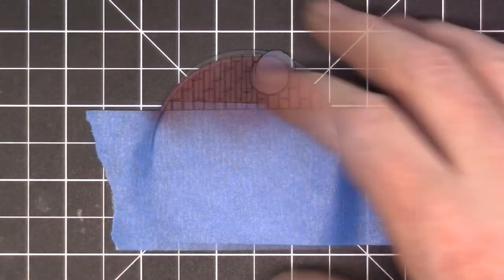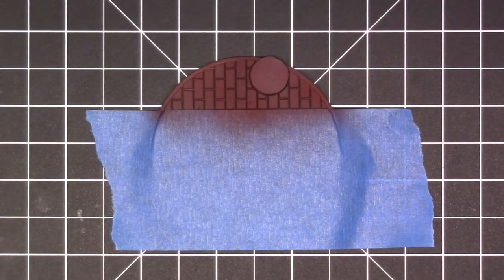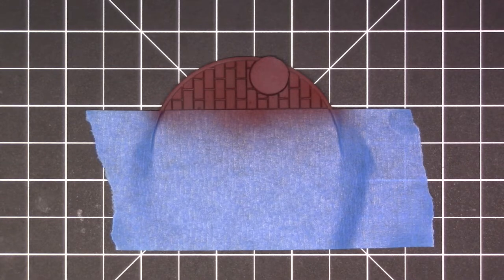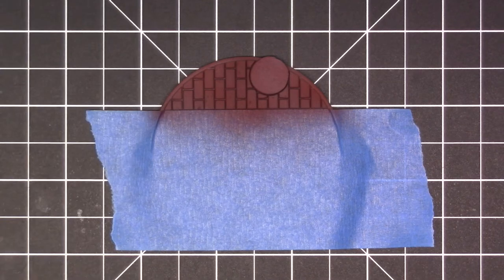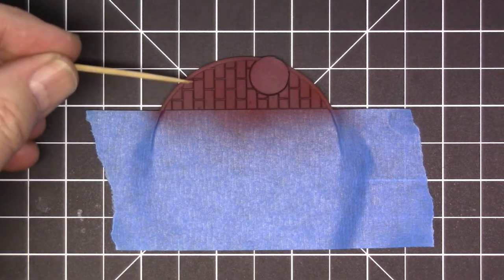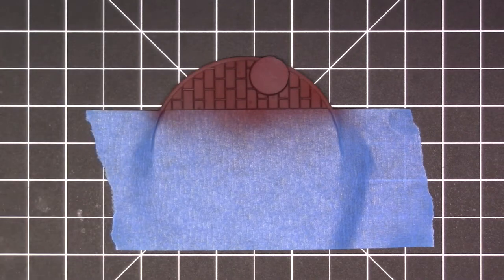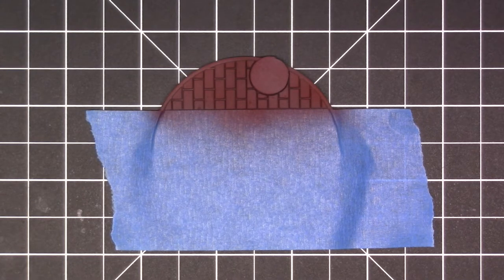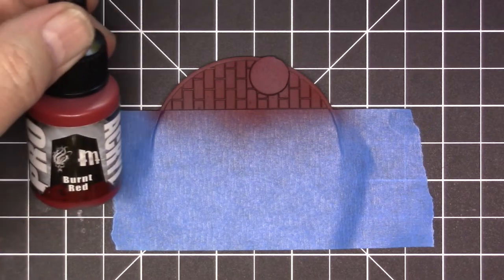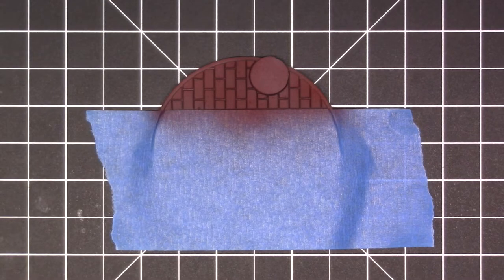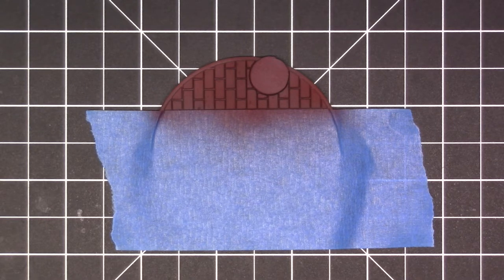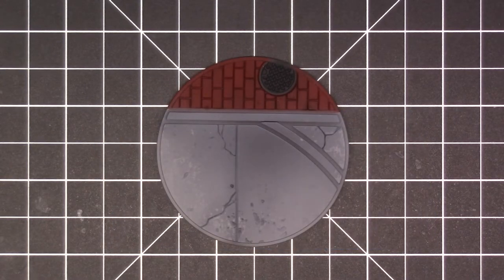I got the burnt red on there. I'm going to take some of this mahogany and hit some of the edges, just kind of break it up a little bit, kind of like a pre-shade like I did on the concrete part. Then I'll come back with the burnt red over top to lighten it all back up.